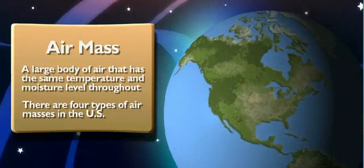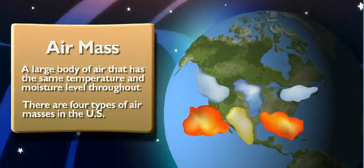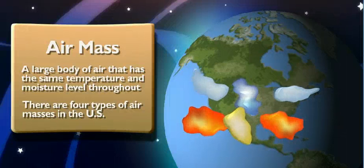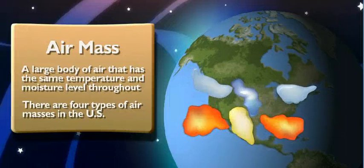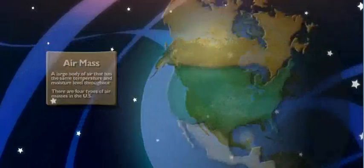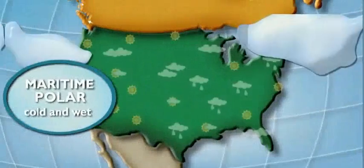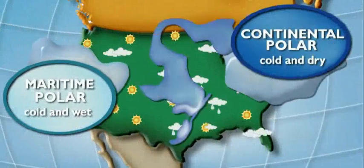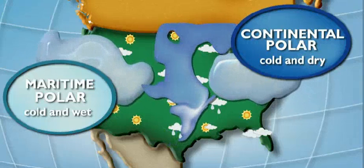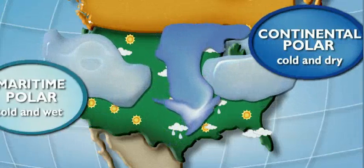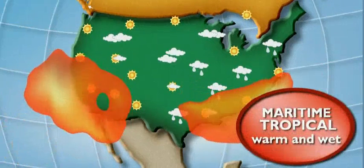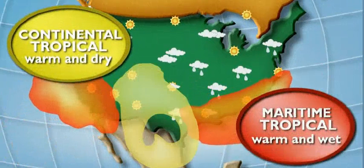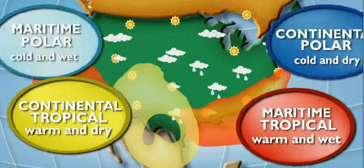There are four different types of air masses in the United States, and each one carries its own temperature and amount of moisture. Two are cold and two are warm. The two cold air masses are the maritime polar air mass and the continental polar air mass. The two warm air masses are called the maritime tropical air mass and the continental tropical air mass.